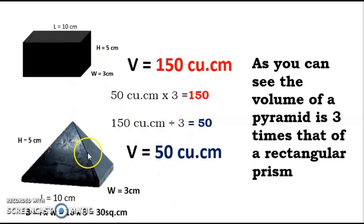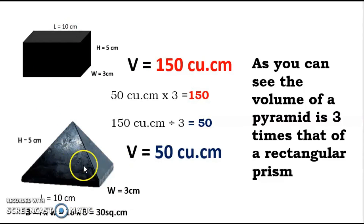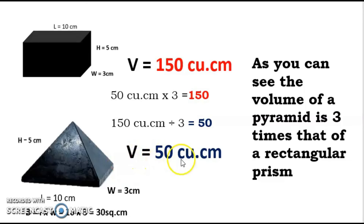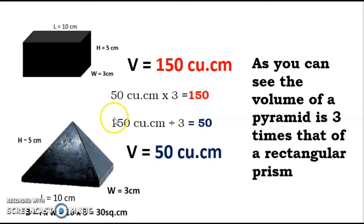Now let's look at the relationship between the rectangular prism and the pyramid. The volume of the rectangular prism with the same dimensions was 150 cubic centimeters, while the pyramid was 50 cubic centimeters. If you multiply 50 times 3 you get 150 — the volume of the rectangular prism. And if you divide 150 by 3 you get 50 — the volume of the pyramid.